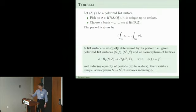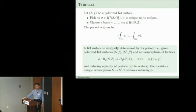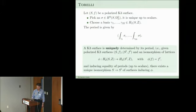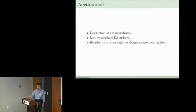The key result in the theory of K3 surfaces is the Torelli theorem: you have periods — some numbers — and from these numbers you can understand what kind of K3 surface you have. In other words, if you have an isomorphism of lattices preserving the polarizations and inducing an equality of periods up to scalars, then there is a unique isomorphism of K3 surfaces inducing this isomorphism of lattices.